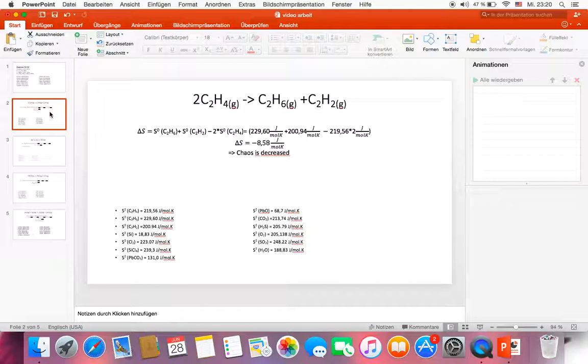In this reaction we have products and reactants. As we know, delta S is the amount of entropy S of the products minus the amount of entropy S of the reactants.